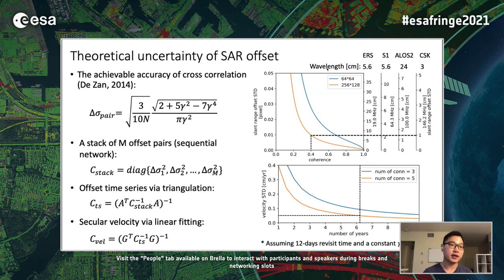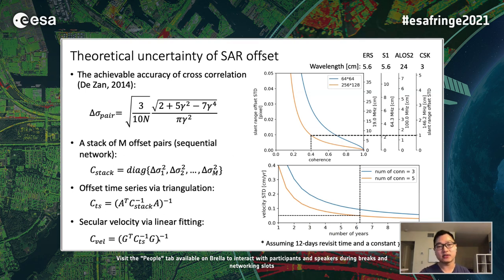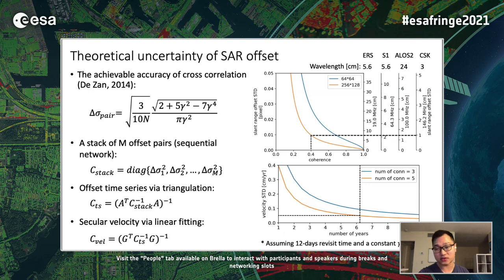If we conduct a time series analysis, we can propagate this uncertainty from the stack of offset pairs to the time series and velocities using the same linear propagation as InSAR time series analysis. We can plot the standard deviation of the offset velocity as a function of time, assuming regular acquisition every 12 days with a constant spatial coherence of 0.6. For Sentinel-1, already over six years, this gives a standard deviation of around half a millimeter per year, which means the theoretical analysis seems promising.